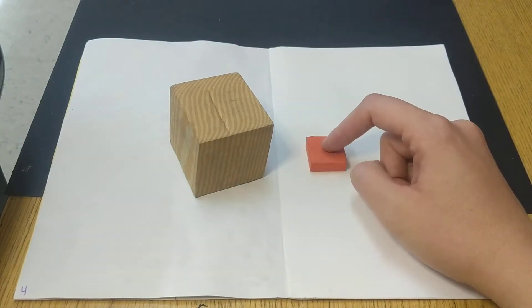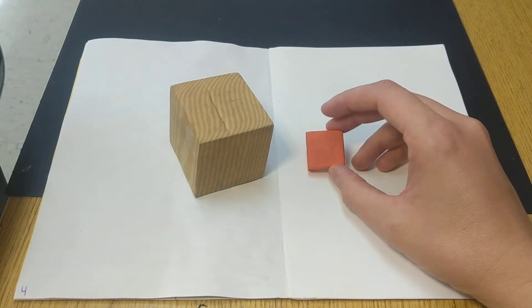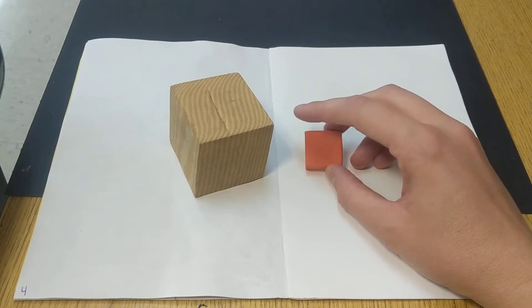This shape is flat. It is two-dimensional. It's a square. It has length, length, and it has width.